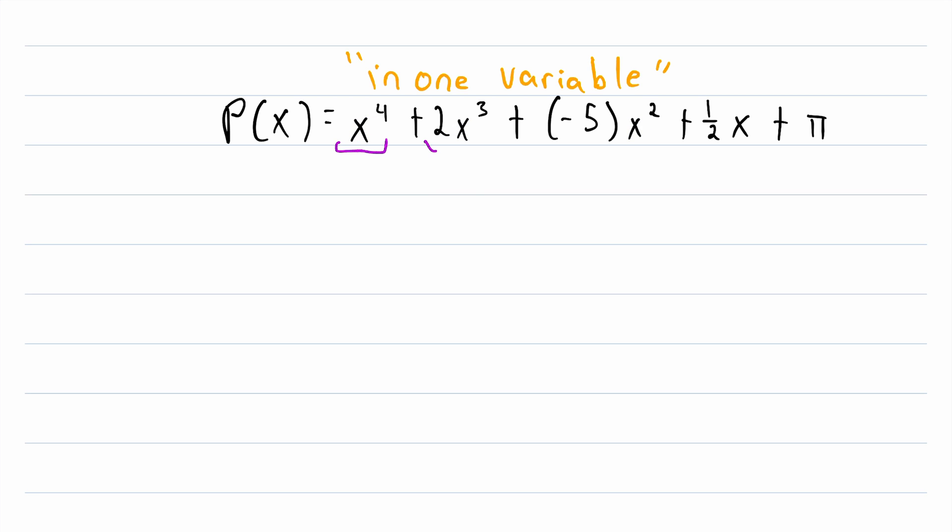A polynomial is an expression made up of the sum of terms. All those purple things I underlined are the terms of our polynomial P. And the terms of a polynomial are each made up of two or three things, depending on how you like to think about it.